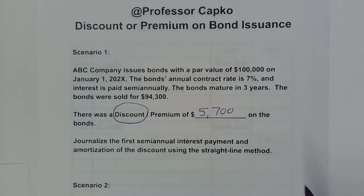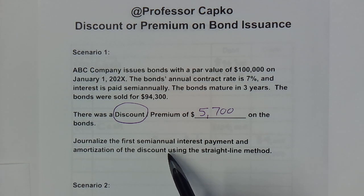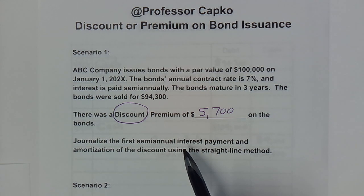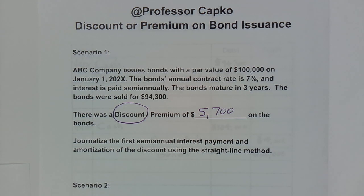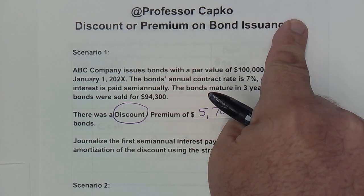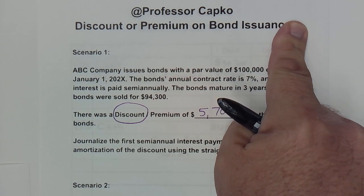In today's video we're going to learn how to journalize the first semiannual interest payment for a bond where there was either a discount or a premium on the bond issuance. I did a few prior videos in this series starting with the one in which we discussed how to calculate whether there was a discount or a premium and how to calculate that amount. If you missed that video, that might be a good starting spot — I've linked it up here for you.